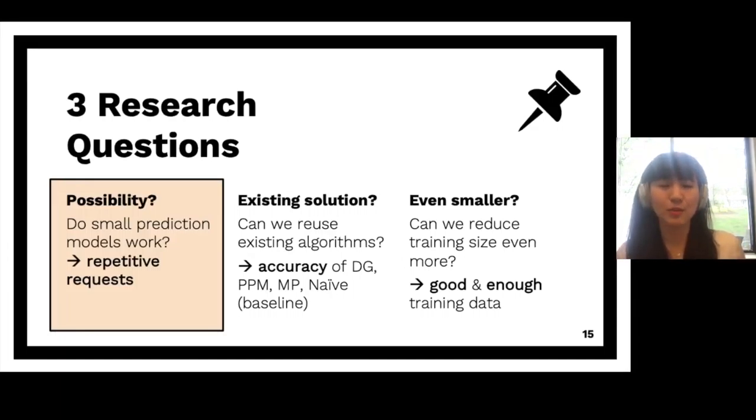Great. So now we have the data set, and we can finally answer some interesting questions. The first question is, of course, do small prediction models even work? Previously, the prediction models are built on top of the data collected for several months or even an entire year. But now, with very small data set that spans only 24 hours, we don't even know if we can predict anything using such a small data set. The first question aims to answer if there are any repetitive requests, which are the prerequisite for any history-based prefetching techniques, because they can only predict the requests that appeared in the past. Long story short, the answer is yes.